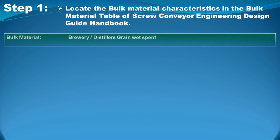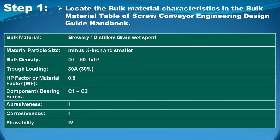Step one is to locate the bulk material characteristics in the bulk material table of the engineering design guide. The material is brewery and distillers grain (spent). The particle size is minus one-half inch or smaller, and the density ranges from 40 to 60 pounds per cubic foot. The given density of 50 pounds per cubic foot falls within this range.